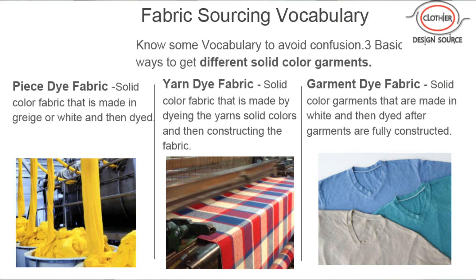Another way to get colored fabric is yarn dye — as described earlier with prints. Instead of weaving everything in white, you dye the fibers before you weave or knit them together. A third way is garment dye. These shirts on the right hand side are made in white — you make thousands of t-shirts in white and then take the actual finished t-shirts and dye them different colors. That is another way to get different colored garments.